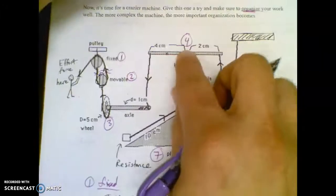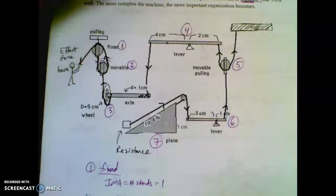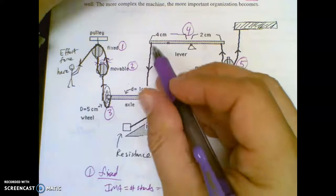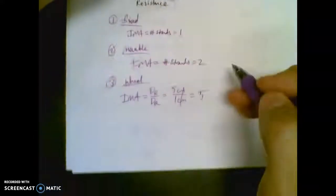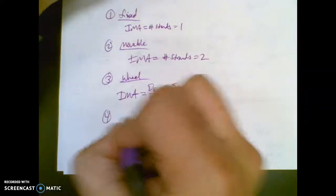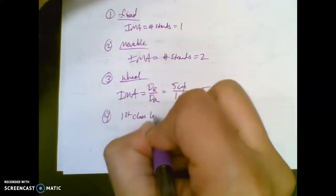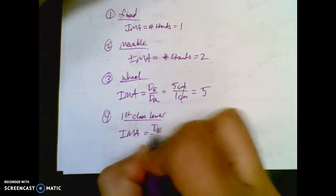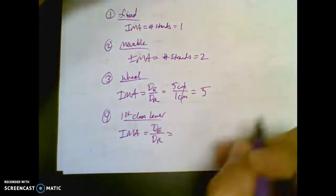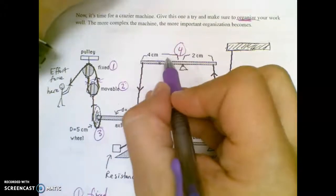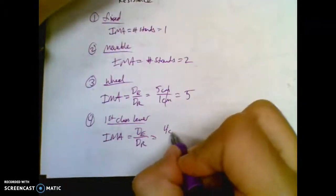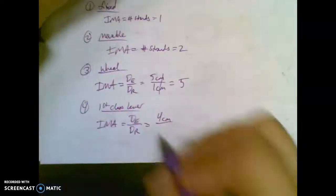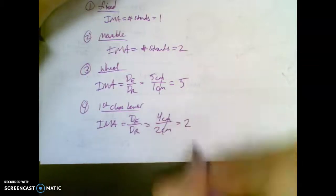Object four is up here. It's a lever. It's a first class lever. Where's my effort? Well, since this reeled up some of the string, your effort is right here. So when I go to do number four, which is a first class lever, I'm going to go IMA is still DE over DR. My effort distance is this, four centimeters. My resistance distance is this, two centimeters. So you get an IMA of two.